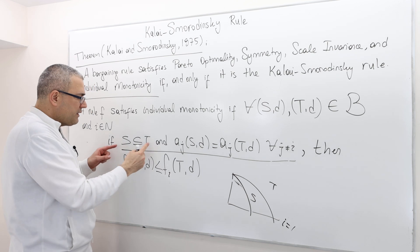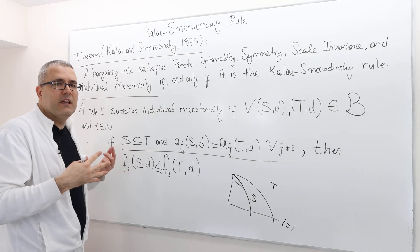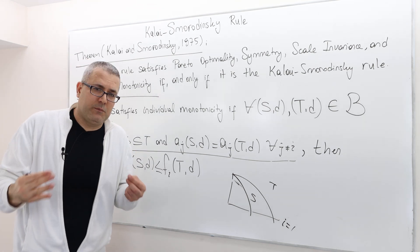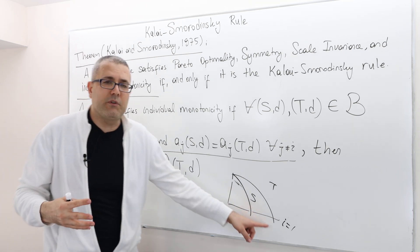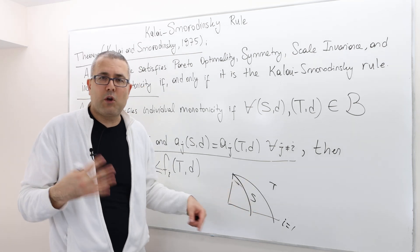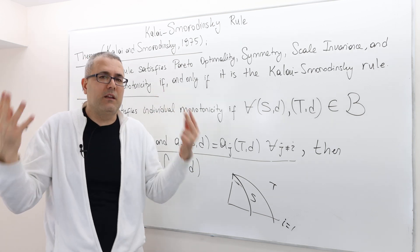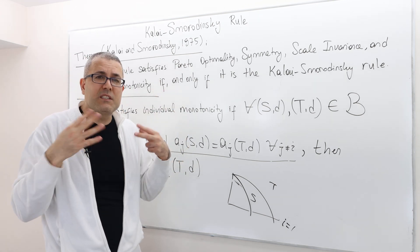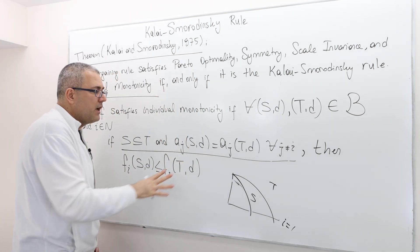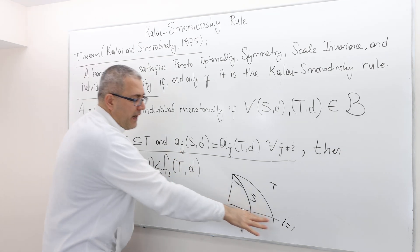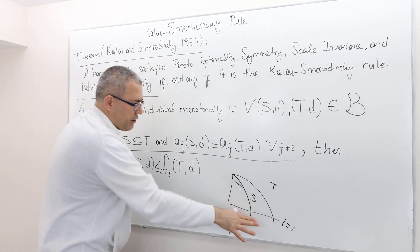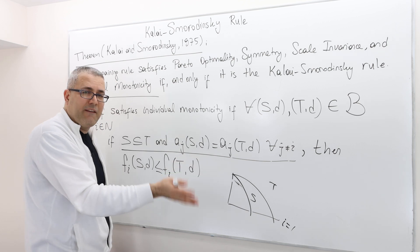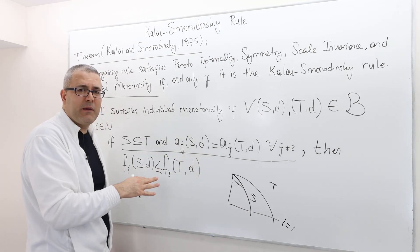Well, because T is a larger set, it means some of the players have a higher aspiration in the bargaining problem T, right? I mean, otherwise, why would T be a larger set than S? So some players. So here, let's suppose player I has a larger aspiration point, and player two, or everybody else has exactly the same aspiration point.